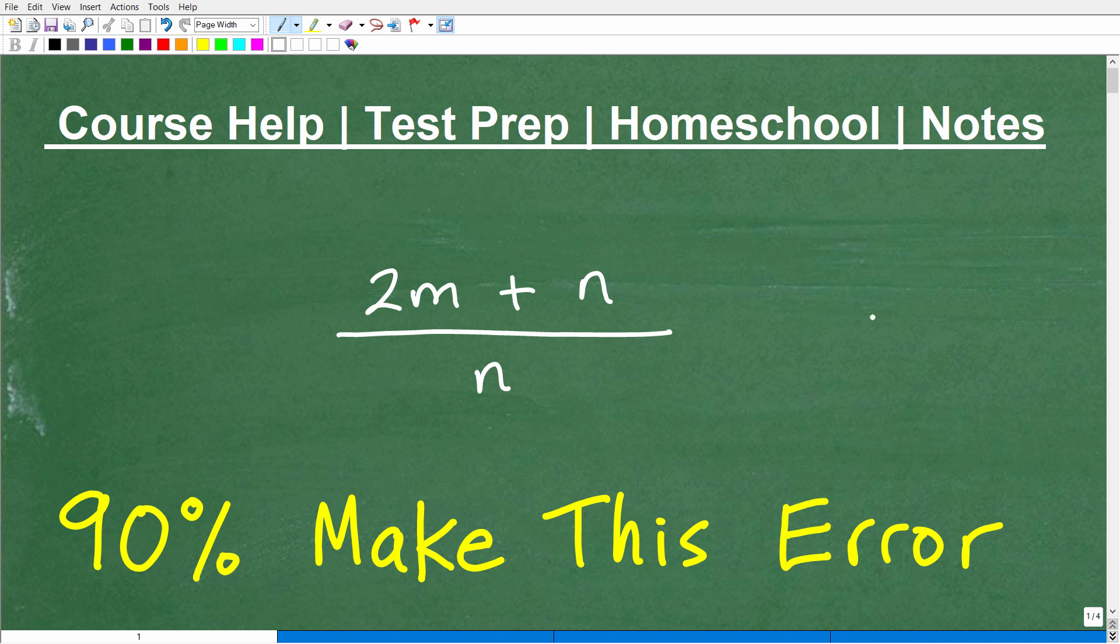Okay, so we have this nice variable expression here, and it is 2m plus n over n, and I'd like you to simplify this.